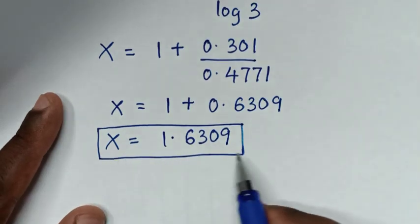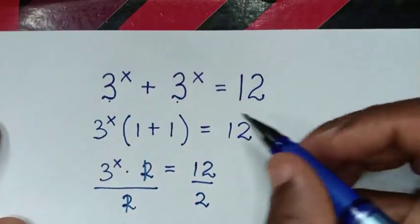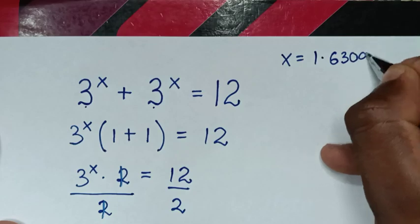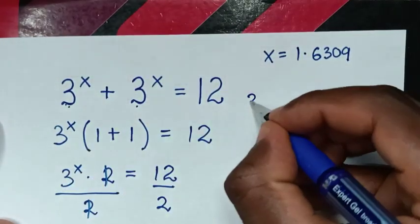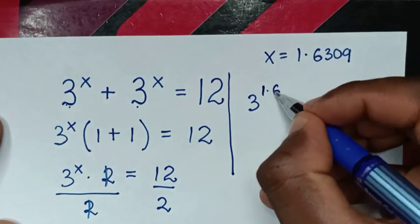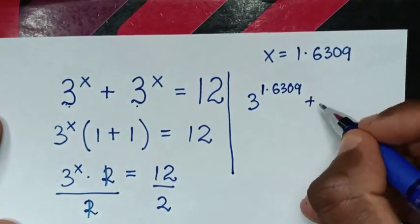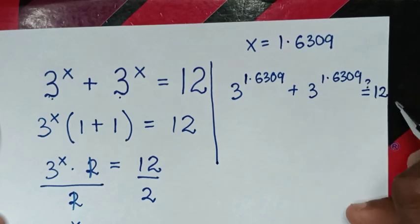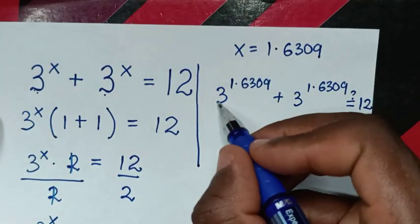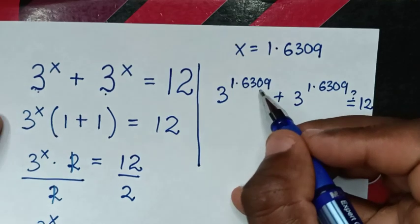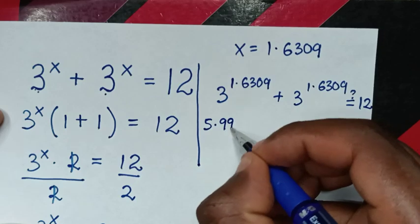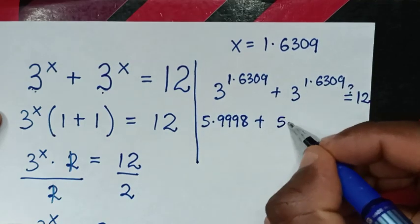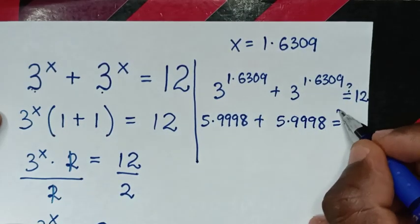Now to check if this value of x is correct, from our problem we'll substitute the value of x into the power. The value of x is equal to 1.6309. So it will be 3 power 1.6309, plus 3 power 1.6309. Is it equal to 12? Then 3 power 1.6309 is 5.9998, plus 3 power 1.6309, which is also 5.9998. Is it equal to 12?